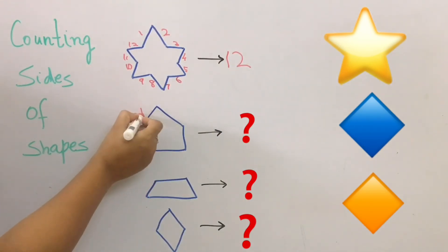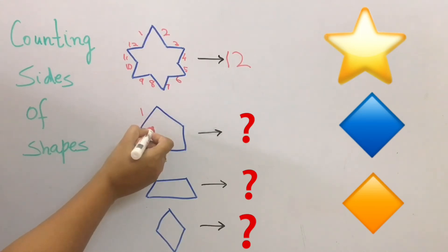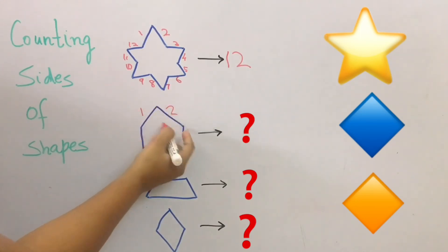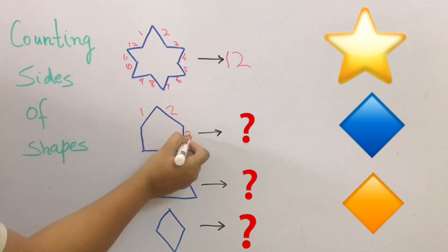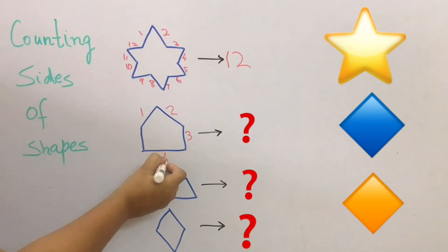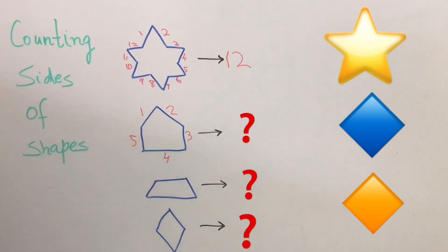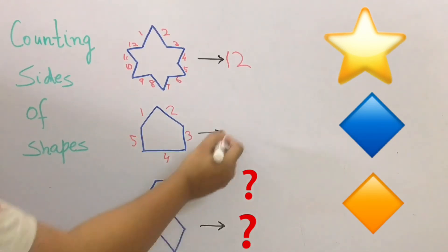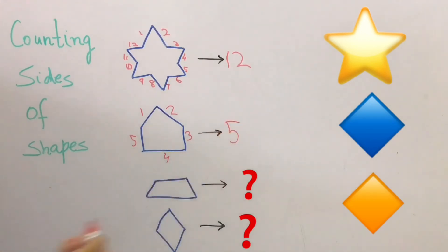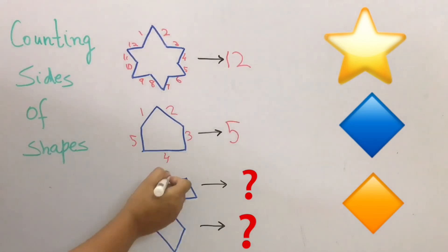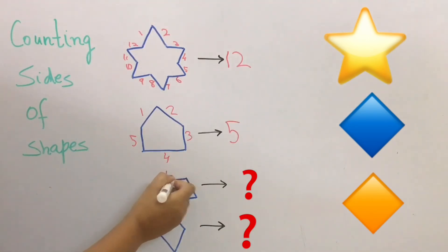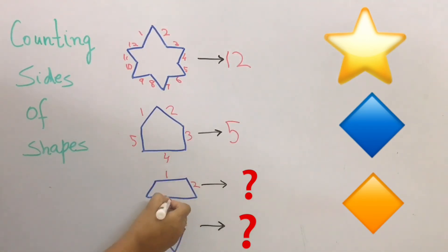Next one is a pentagon. Let's count the sides — one, two, three, four, and five. So pentagon has five sides. Now we have a trapezium — let's see how many sides it has: one, two, three, and four. So four sides.